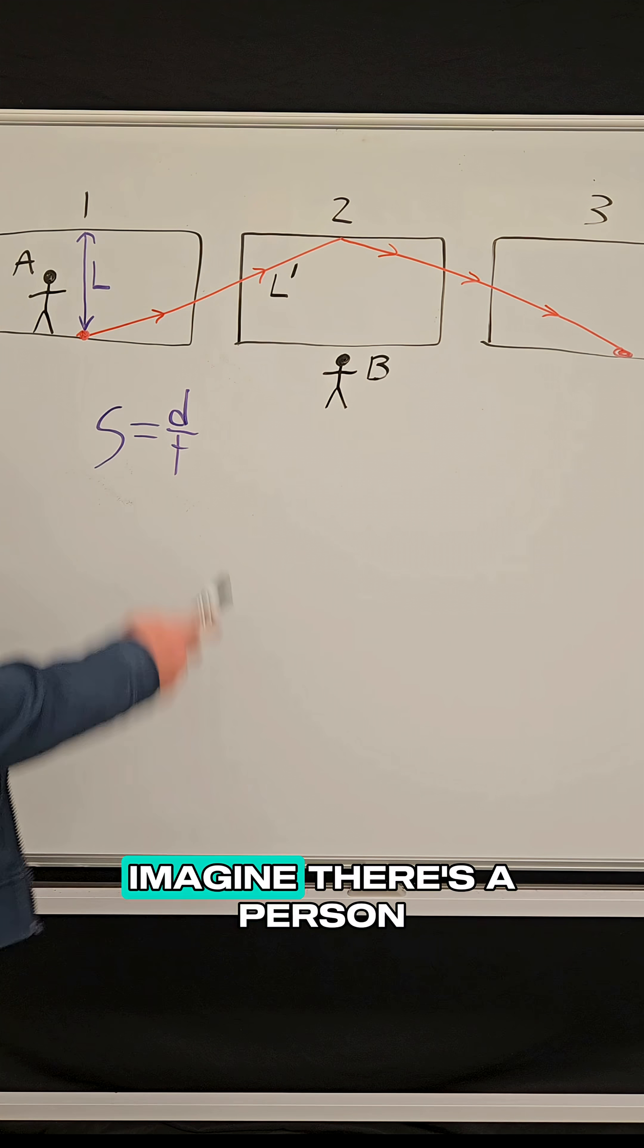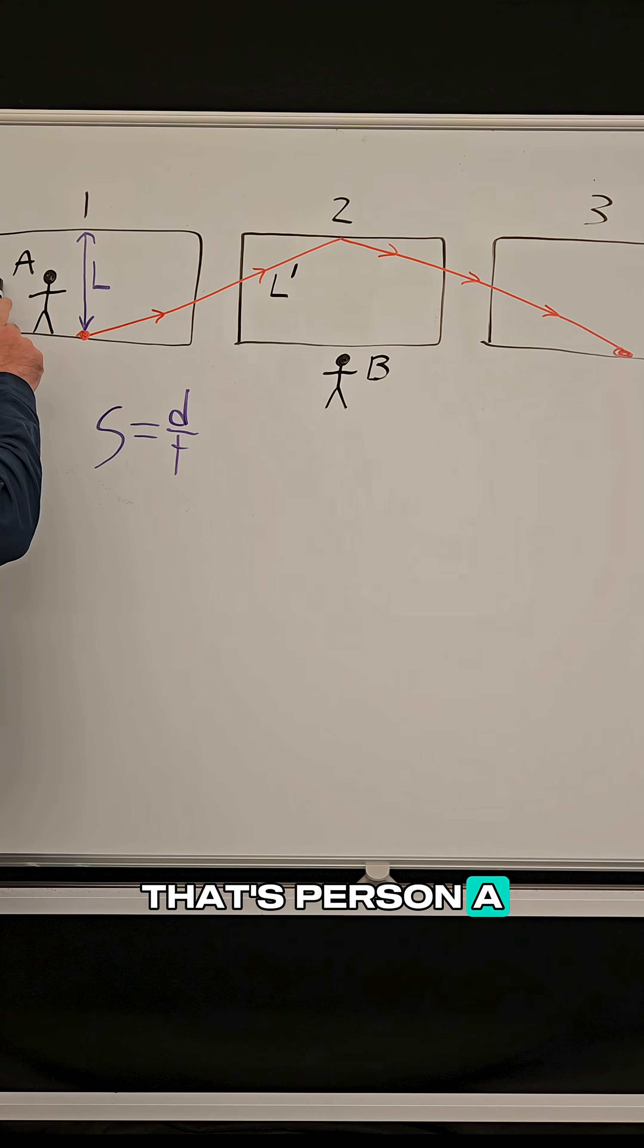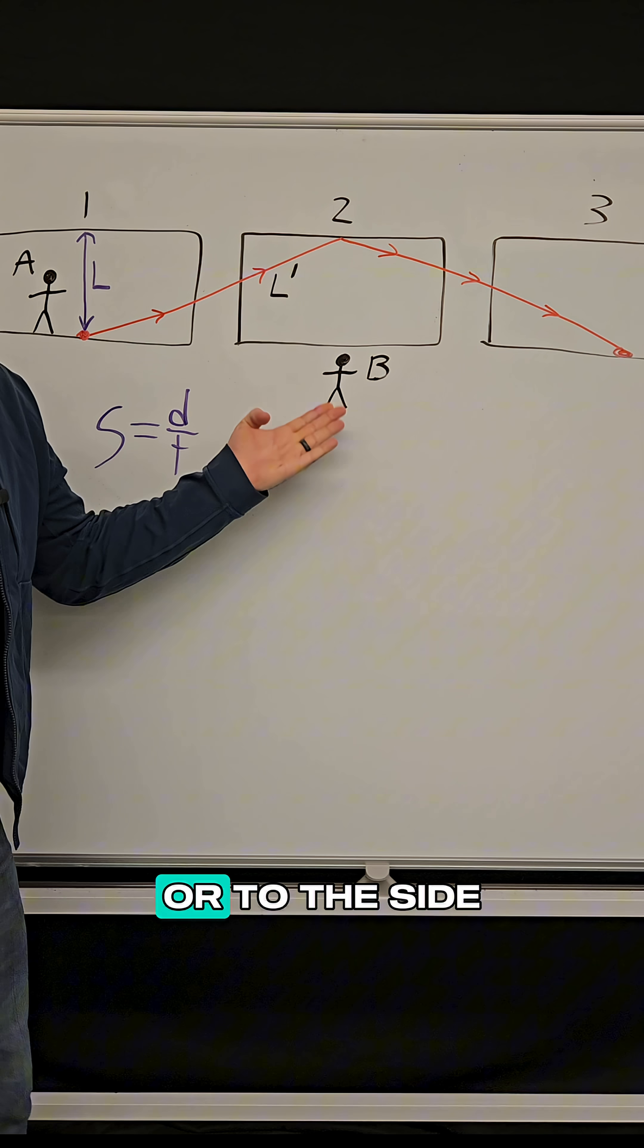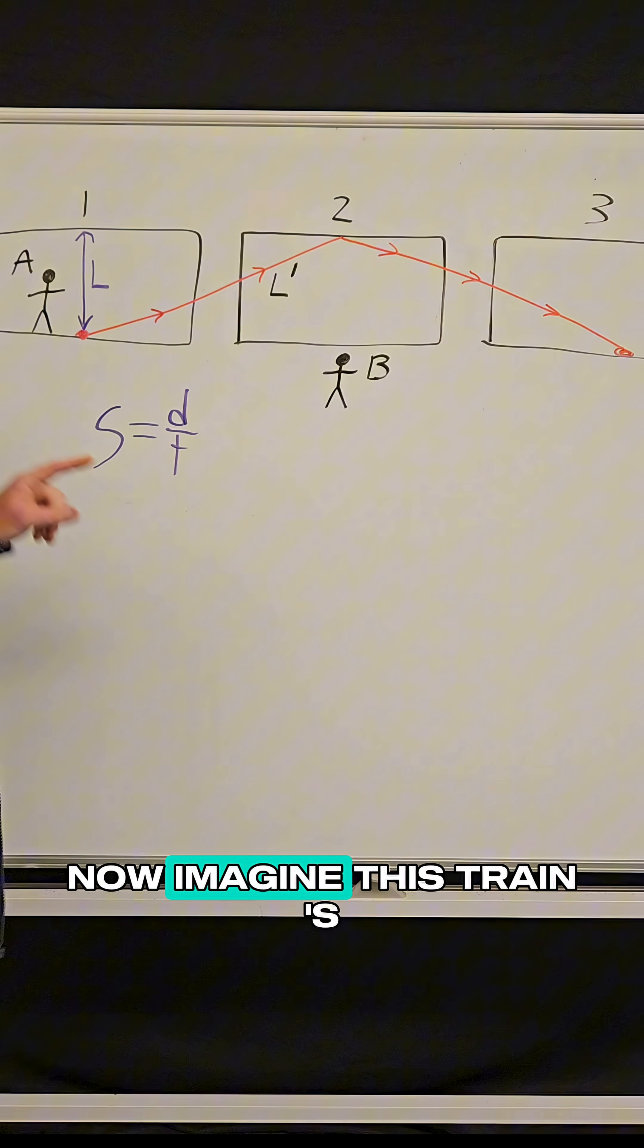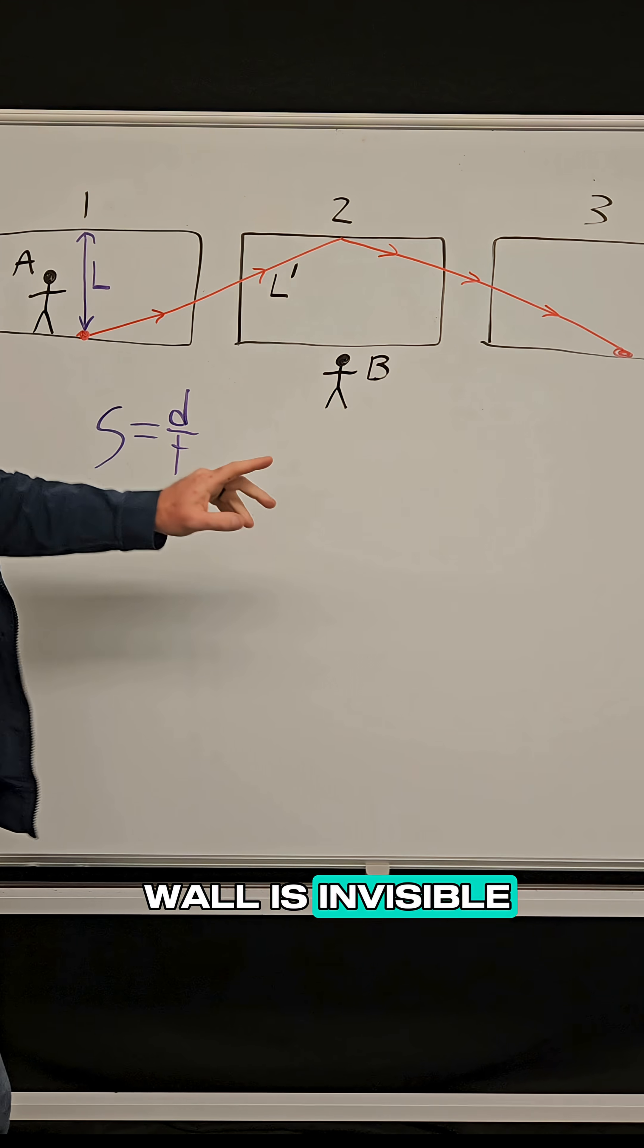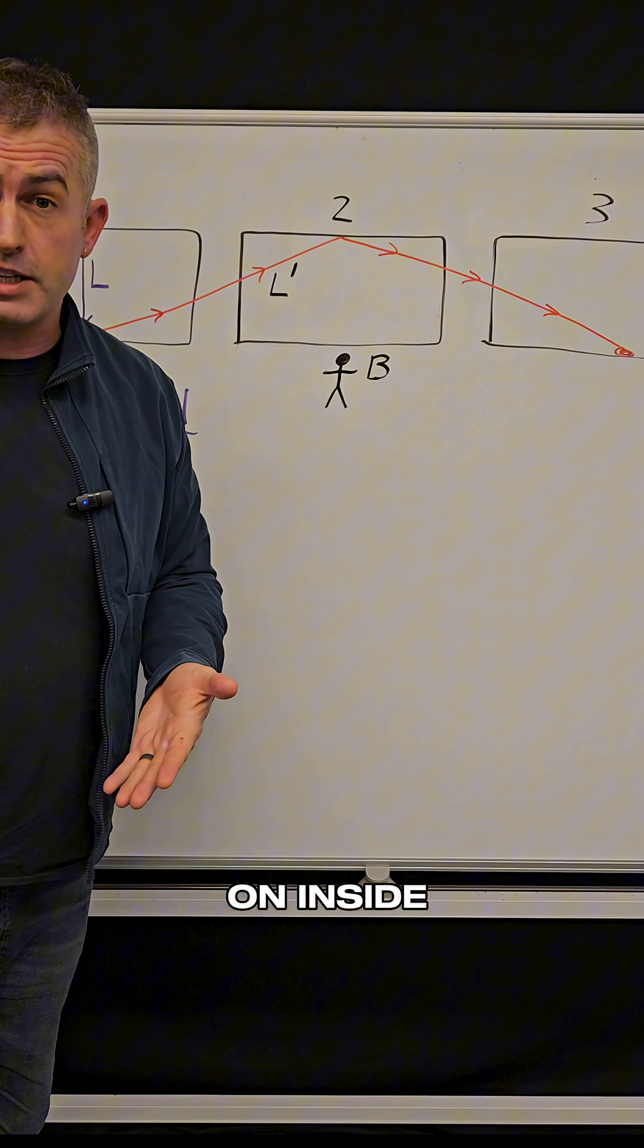And then he said, imagine there's a person on this train, that's person A, and there's another person on the train tracks or to the side, just watching this train go by. That's person B. Now imagine this train's wall is invisible so that person B can see what's going on inside.